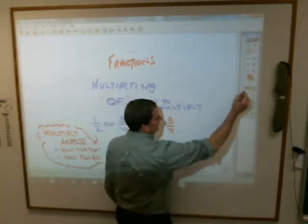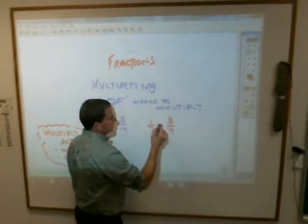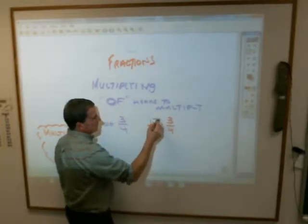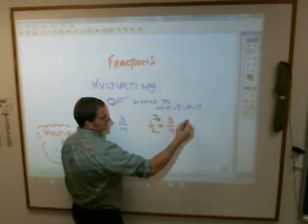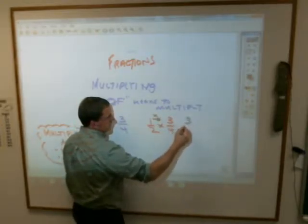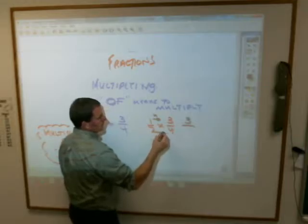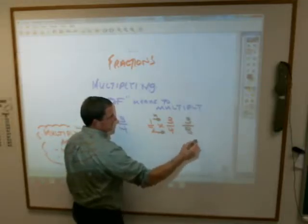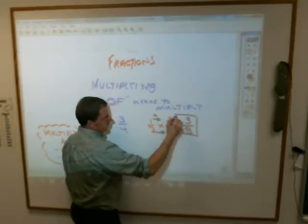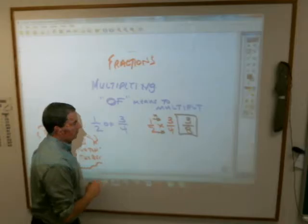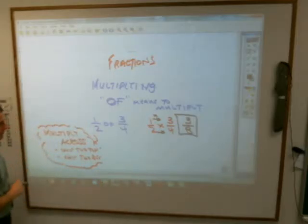So if you have one-half times three-fourths, you multiply across. One times three is three. Two times four is eight. That gives you three-eighths. We can see if we can reduce it, which we can't. We'll talk about how to reduce in a second, which we've done before.